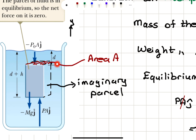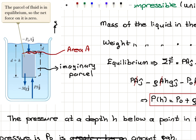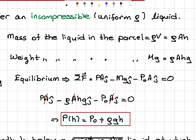The mass of the liquid in the parcel is the density of the liquid multiplied by the volume. Since the perpendicular area is A, the volume is A times h, the height of the parcel. The weight of the liquid in the parcel is mg, where the mass is rho times A times h. Since the parcel is in equilibrium, the net force is zero.